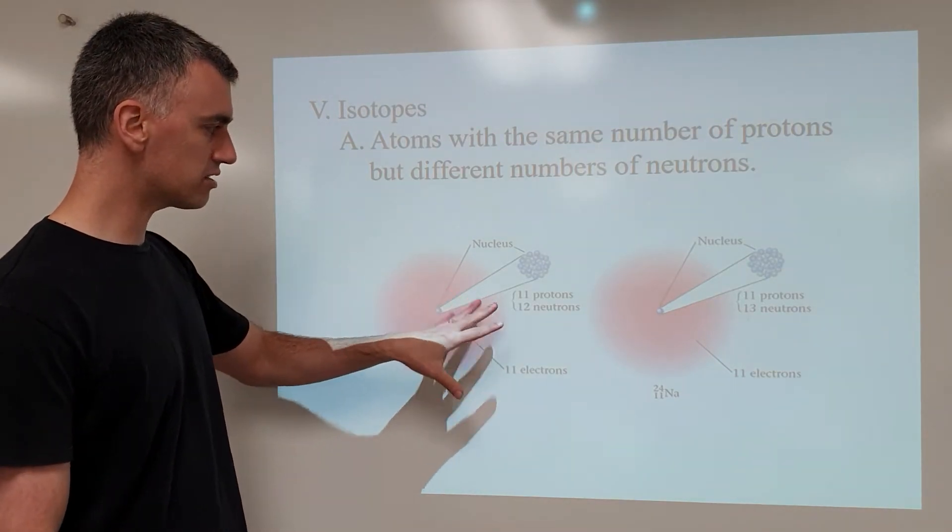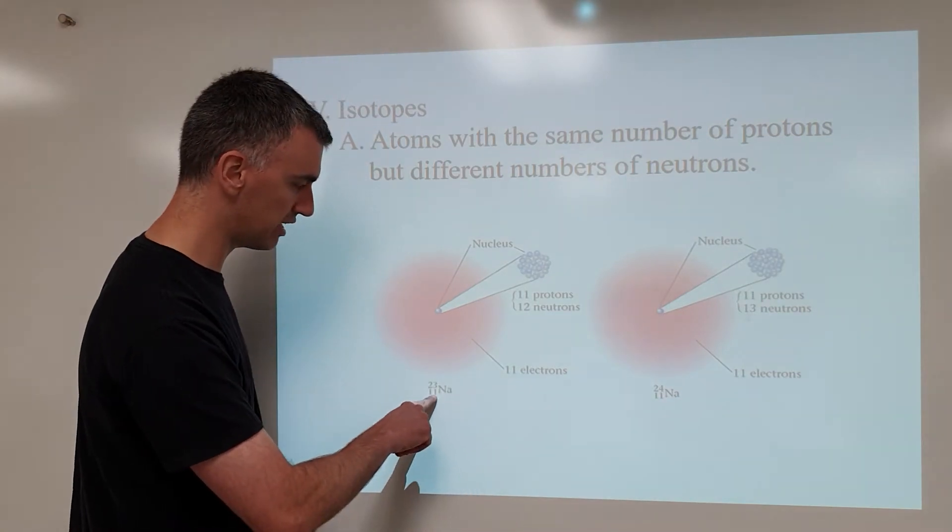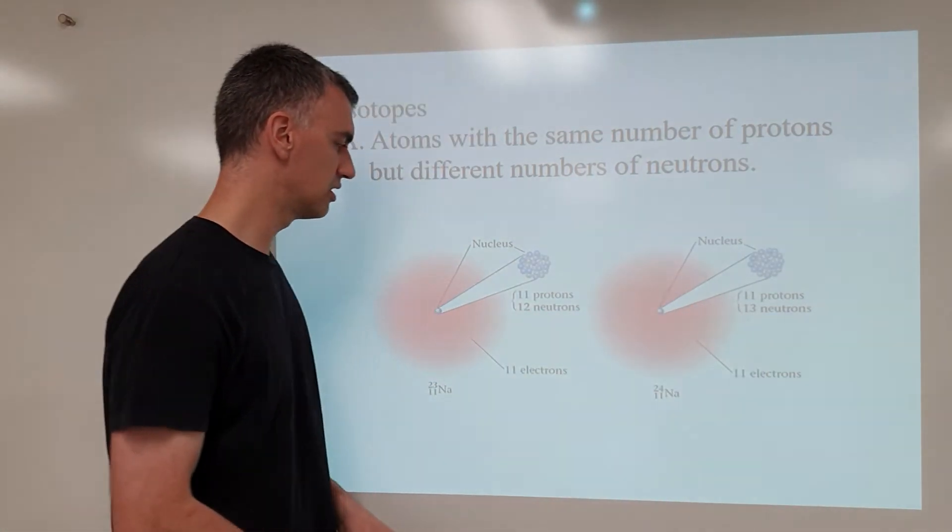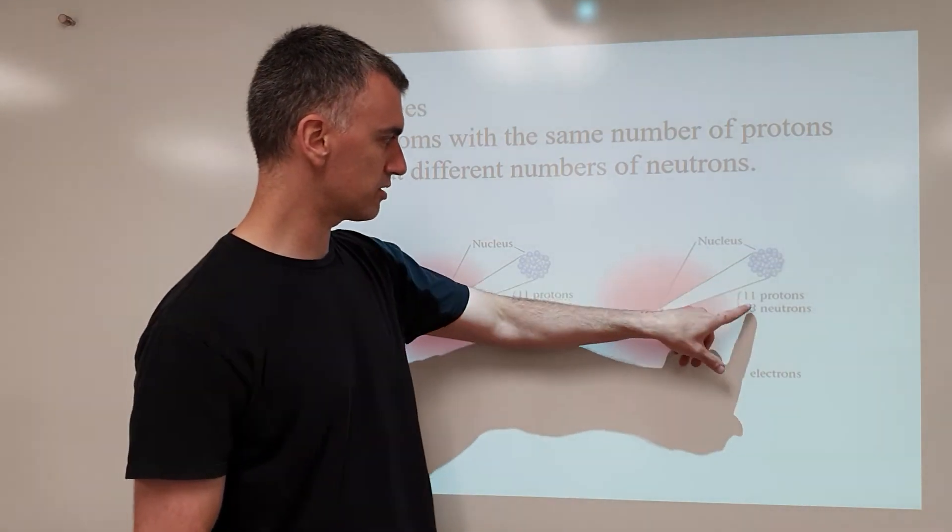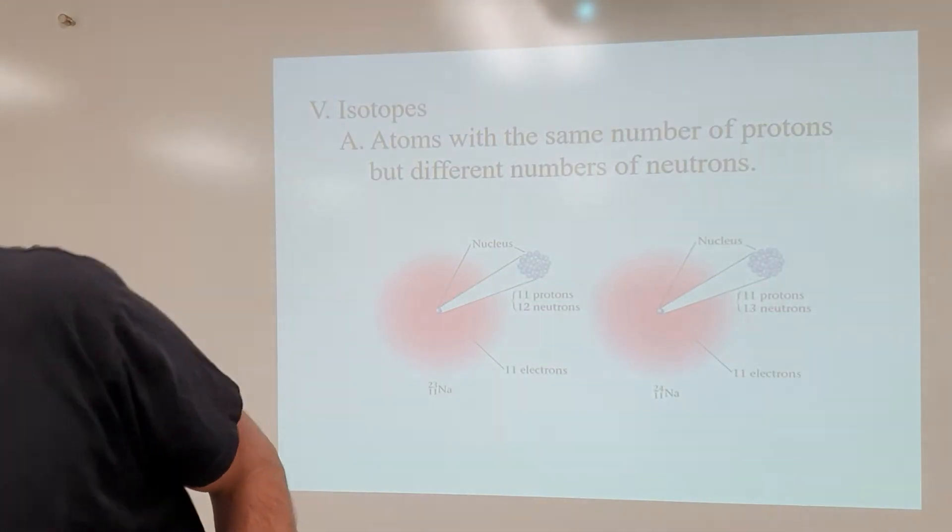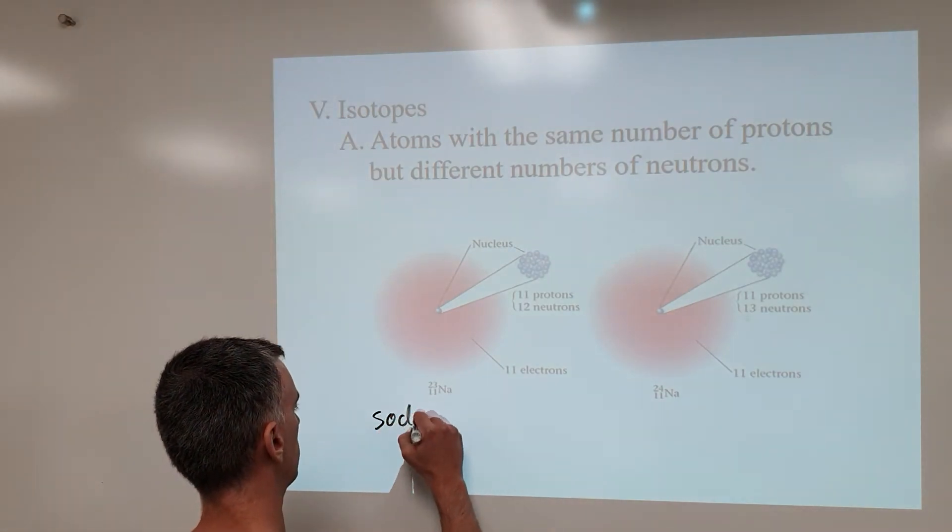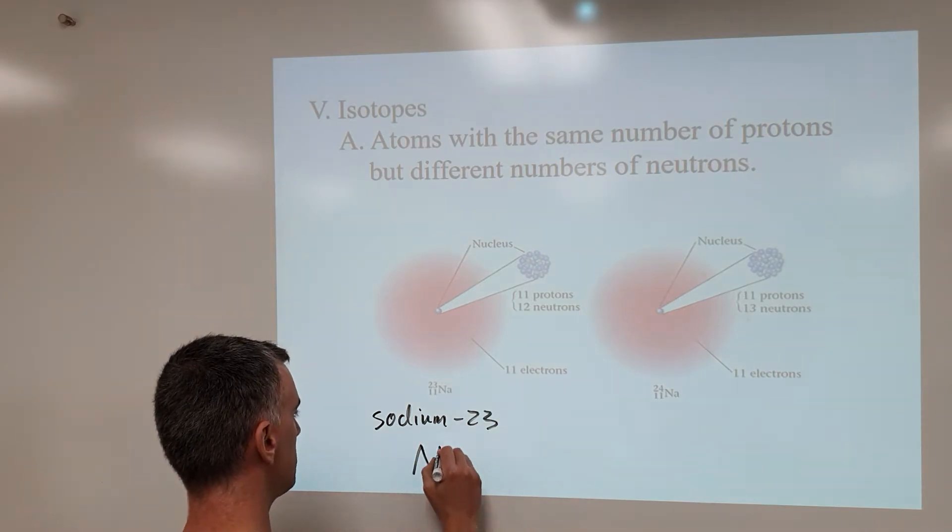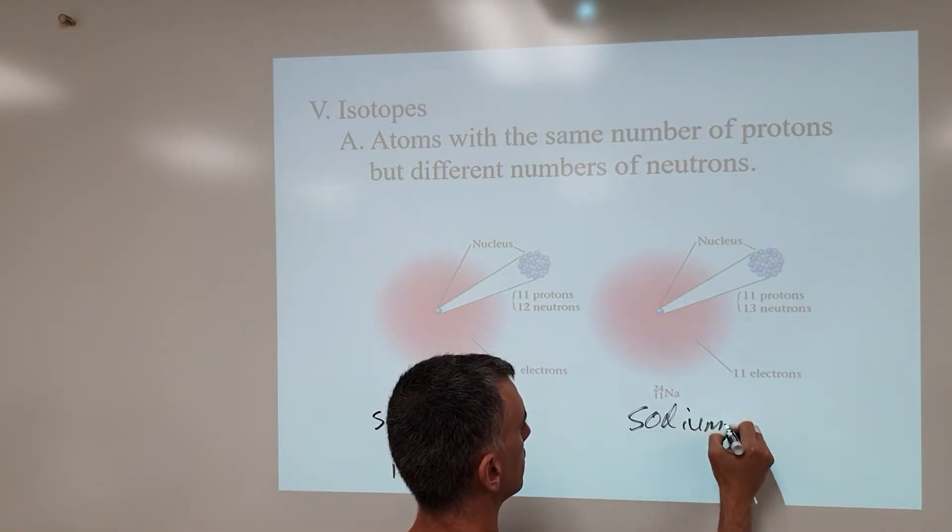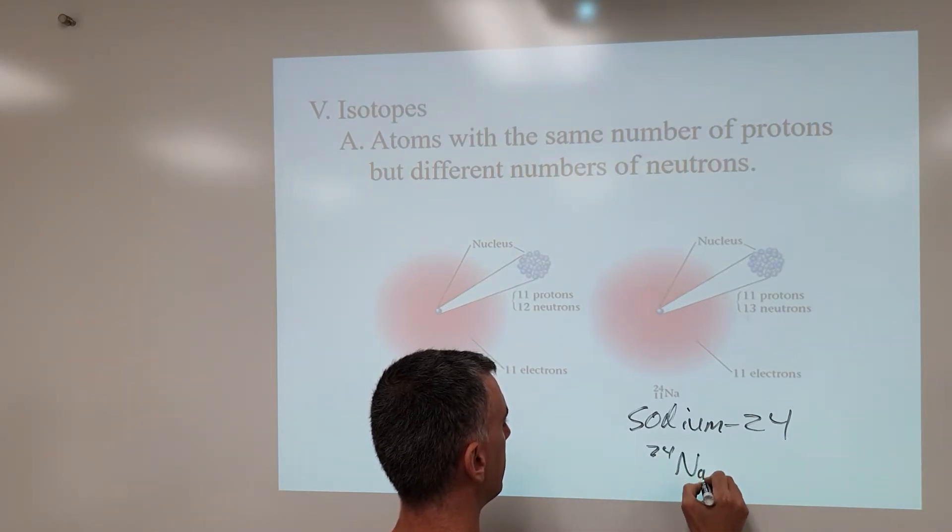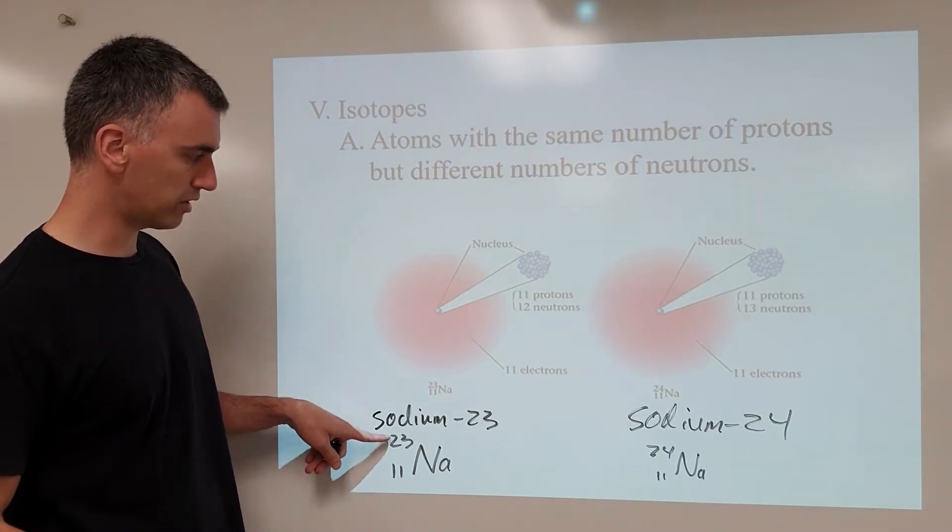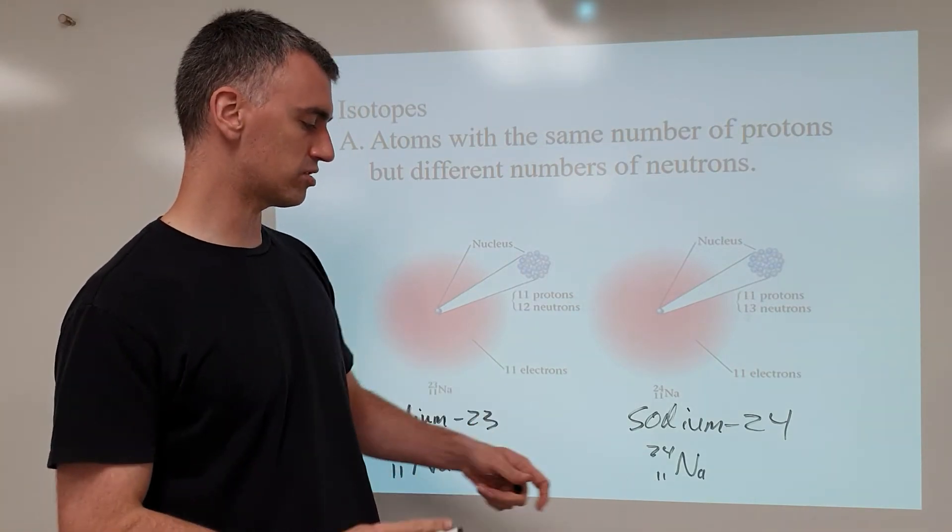Consider, these both have 11 protons. That's what this little symbol is saying right here. They're both sodium. But you'll notice this one has 12 neutrons, this one has 13 neutrons. So we total those up to say 11 plus 12 is 23, or 11 plus 13 is 24. So this is sodium 23 and this is sodium 24. This 11 tells you it has 11 protons. This tells you that protons plus neutrons equals 23, or 11 protons, and protons plus neutrons equals 24.